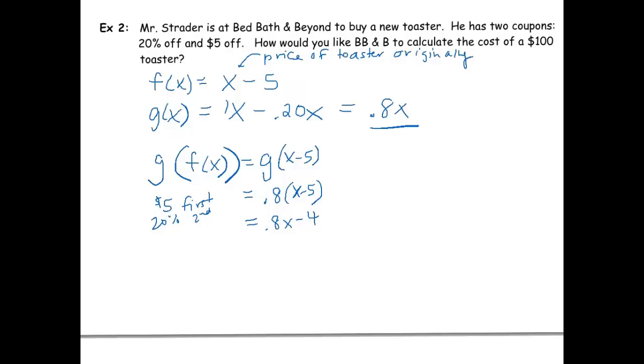So that's using the $5 first. Let's do it the other way now, so let's do f of g(x). So that would be f of .8x, which would be, we're going to take .8x and substitute it into the f(x) function, so .8x minus 5.